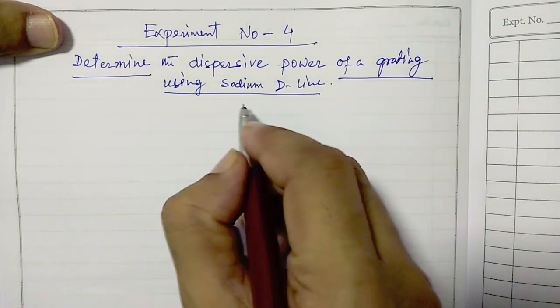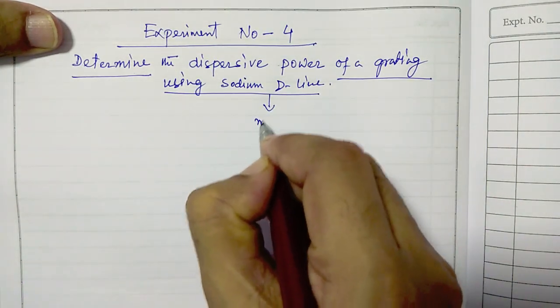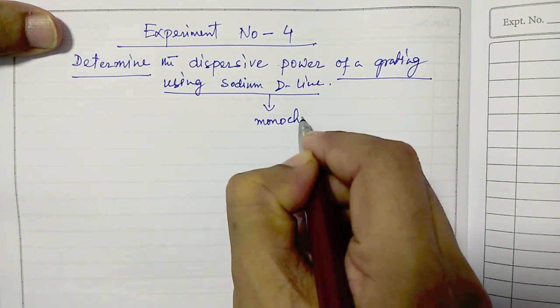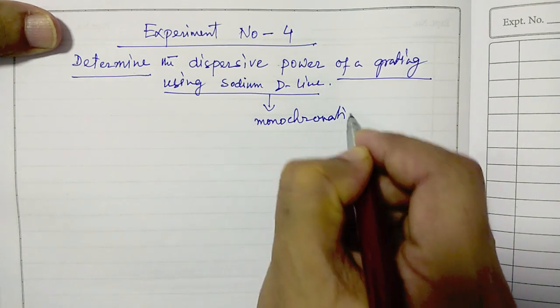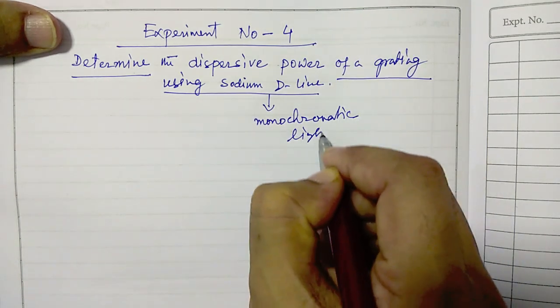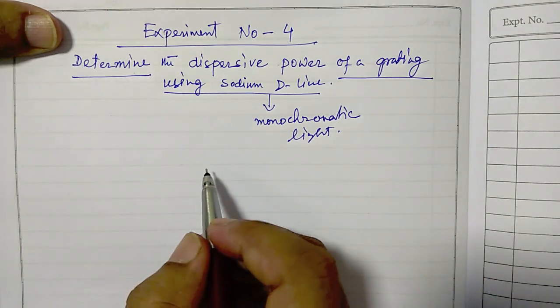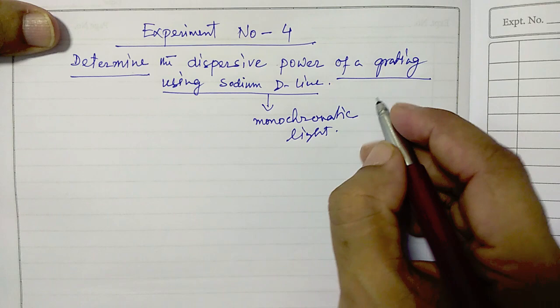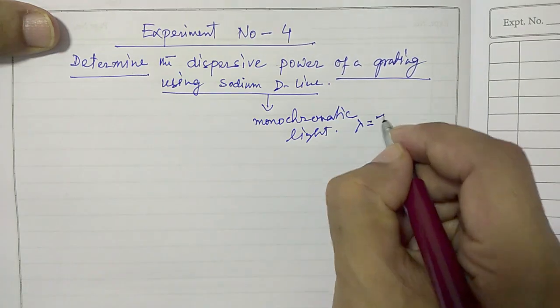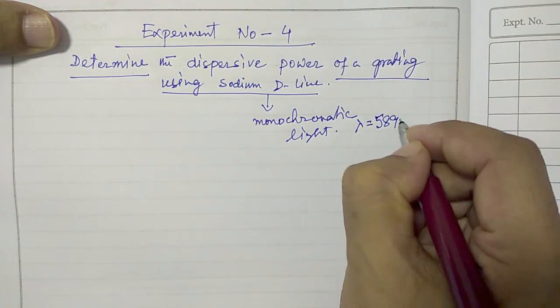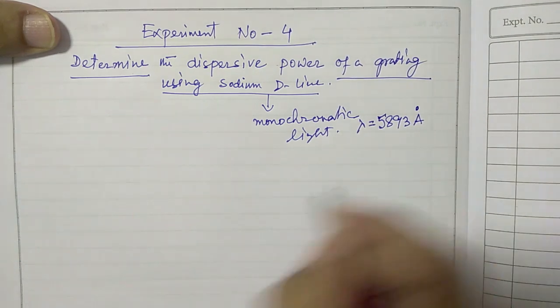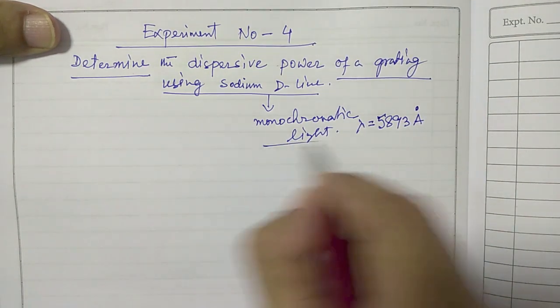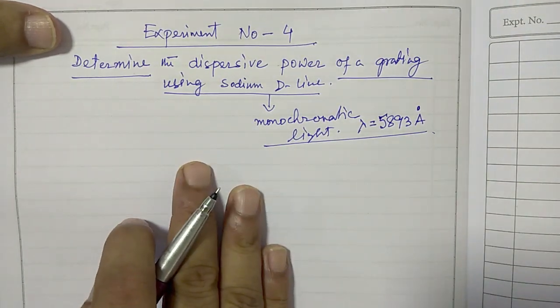Sodium light is a monochromatic light. It has a wavelength, a particular one single wavelength, and that wavelength is 5893 angstrom. That is the wavelength of the sodium light that we are using.